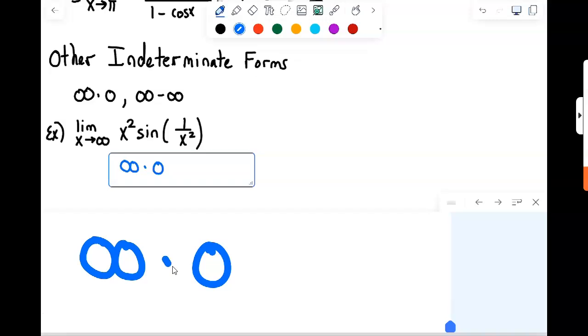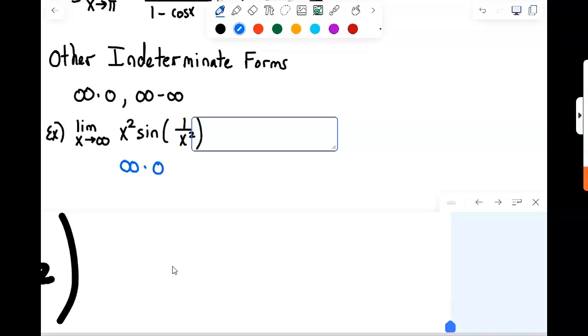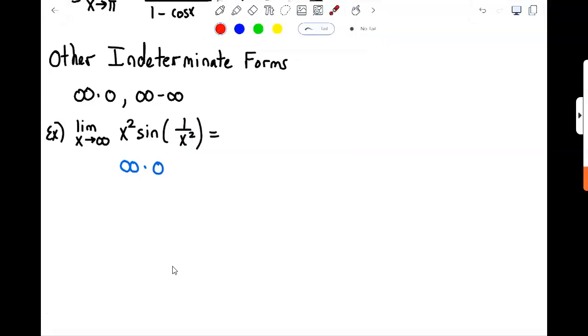What we do with an infinity times zero situation is we transform it by rewriting it so that it's either zero divided by zero or infinity divided by infinity. And the way we do that is by taking one of my two pieces, and I can take either piece. It doesn't matter. One of my two pieces, and rewriting it, divide it by the reciprocal of the other piece. Because if I divide by the reciprocal, I would then take the reciprocal of that and get back to my answer.